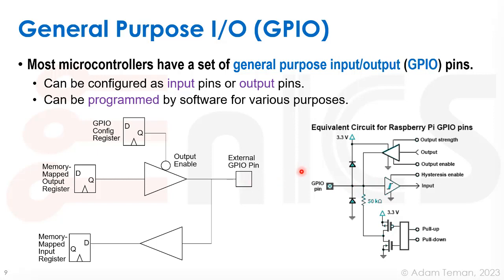Pull-up and pull-down circuitry gives a default value of zero or one if nothing is connected to the pin. We can use this for bootstrapping an initial value at startup. The output may also go through hysteresis for noise protection. So, a GPIO can be configured as input or output via register programming: write zero for output, write one for input. At boot, we configure the I/O register, then we can peek or poke to read or write values.